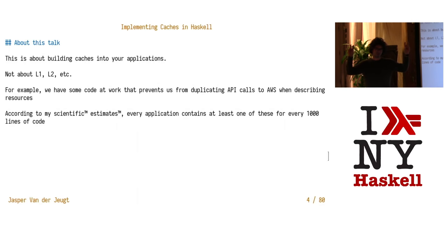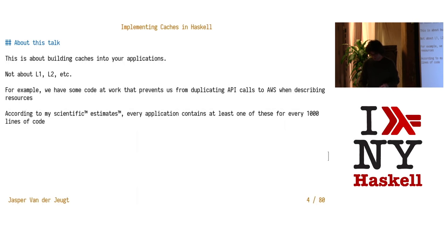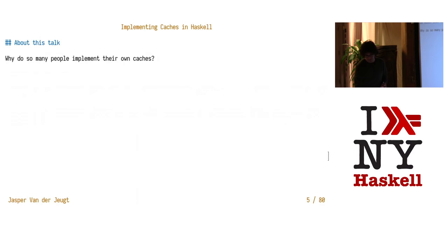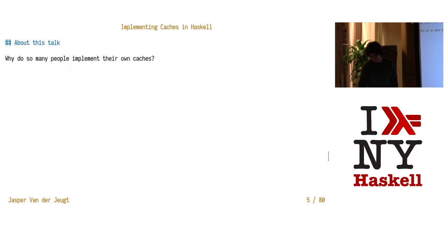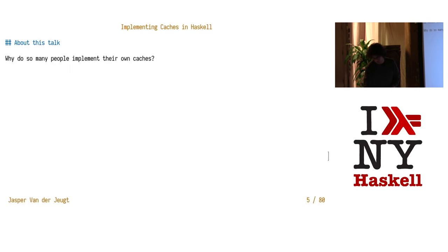My scientific estimate is that there's one of these sort of caches in every around thousand lines of code. That's the kind of caches I'm going to talk about today. So the question is first, why do so many people end up implementing their own caches this way? At least at the places I've worked at, it's been surprisingly common.